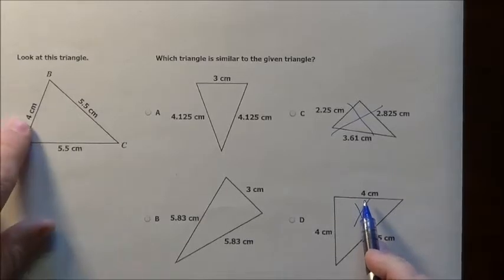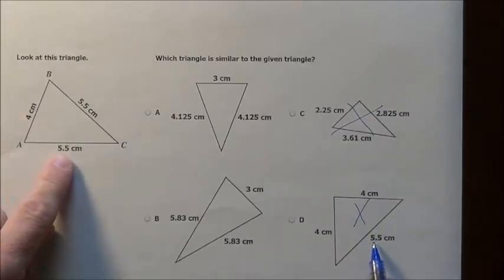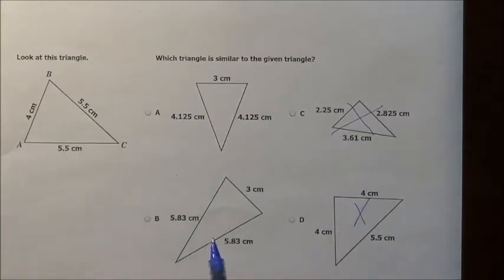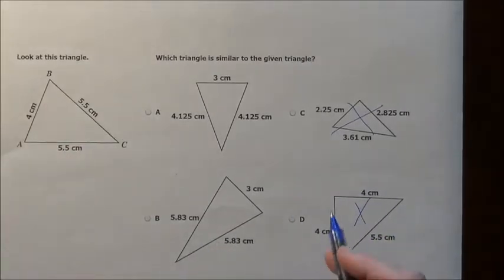Because the 4 expanded to a 5.5 and the 5.5s shrunk to a 4. You can't have one side expand and one side contract. That doesn't make sense. So C and D are out.